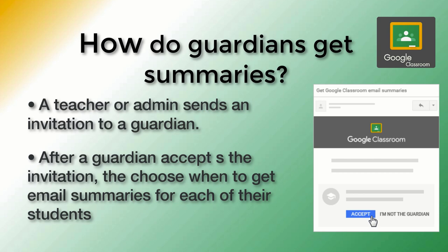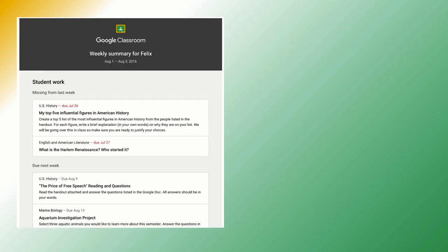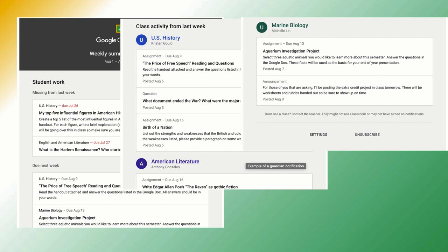The teacher will have to add the guardian into the classroom to receive the email summaries, so you will need to email the teacher and request to be added to a particular student. If the guardian is added to multiple classrooms, there should still be just one email for the one student that includes information about multiple classes. You can get the emails daily or weekly, but there are also a lot of reasons you might not be getting an email — see those reasons listed here. Here is a sample of what these email summaries might look like.